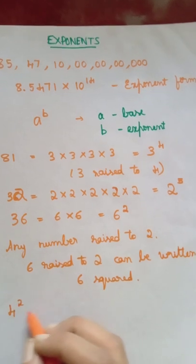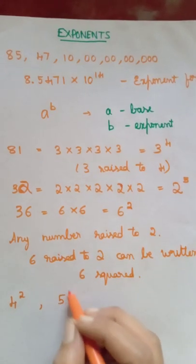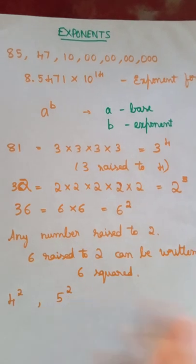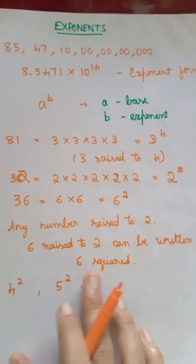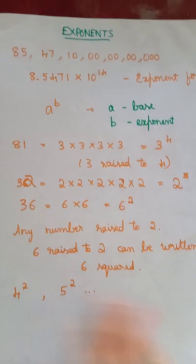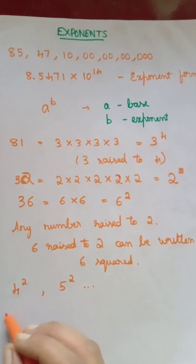So if you have 4 raised to 2, it is 4 square, or 5 raised to 2, it is 5 squared, and so on. So any number raised to 2, it is said as squared. And any number raised to 3...